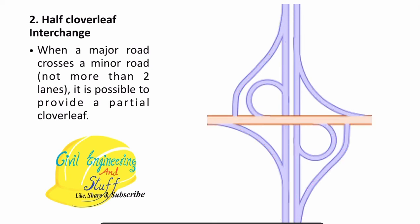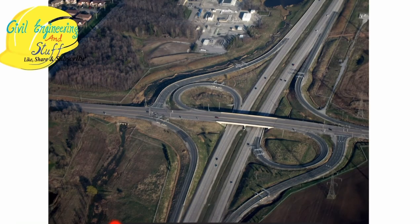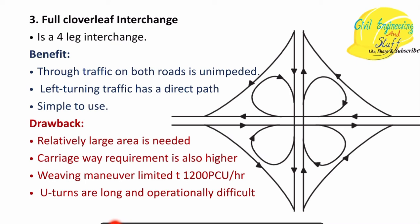When two loop sections are used along with the four interchanges, it is called the half-cloverleaf. A practical example is shown. The full cloverleaf is the extended form — when we have four loop sections along with the four-leg interchange, it is called the full cloverleaf interchange.